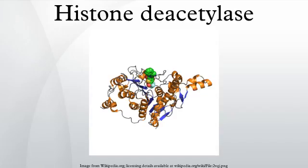NF-κB is a key transcription factor and effector molecule involved in responses to cell stress, consisting of a p50/p65 heterodimer. The p65 subunit is controlled by acetylation via PCAF and by deacetylation via HDAC3 and HDAC6. These are just some examples of constantly emerging non-histone, non-chromatin roles for HDACs.